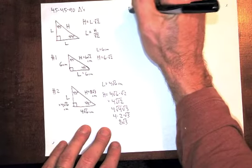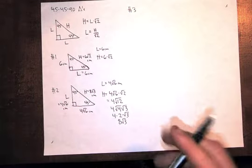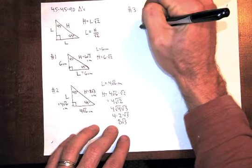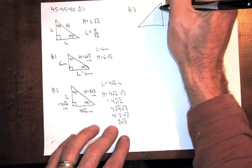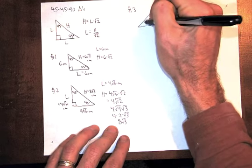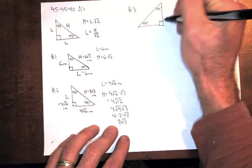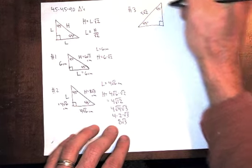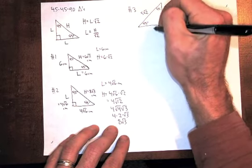Example number 3. What if they give you the hypotenuse? And a triangle could be a different way. It could be this way. 45, 45, 90. What if they say H is 5 square root of 2? And find the other two sides. Well, those are our two legs.